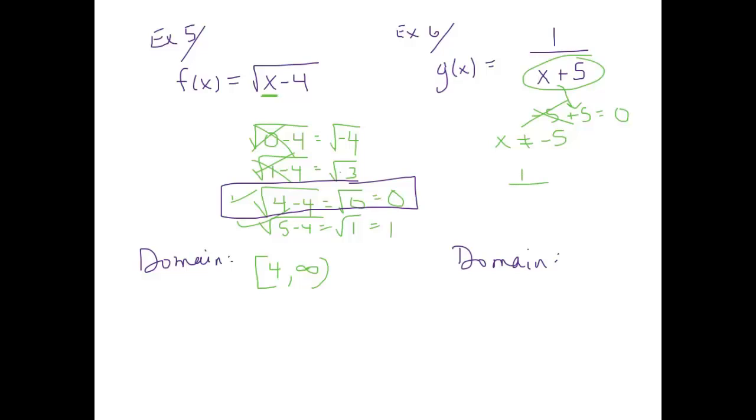Can I have one over negative six plus five? Let's see what we get. One over negative one, which is negative one. There's no issue here. So we're looking at two very different examples. Here on number six, the denominator can't be zero, but it can be anything else.